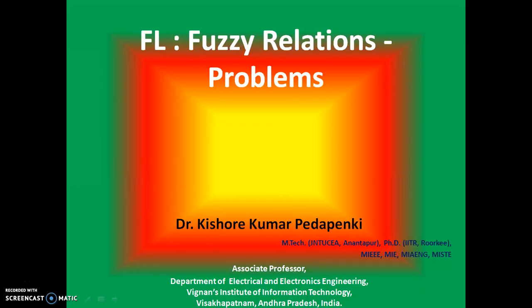Hi friends, in the last video we have seen the fuzzy relations, cardinalities, Cartesian product, operations, properties and compositions. In this video let us see the problems on Cartesian product and composition — how these two will be worked out as per problems are concerned, directly if you have given the fuzzy sets or fuzzy relations, how you can make the Cartesian product and how you can make the composition.